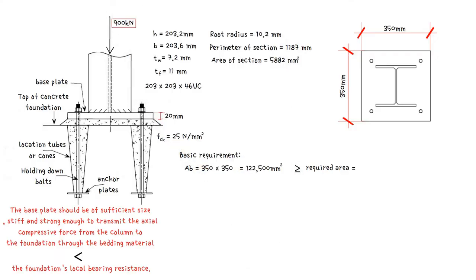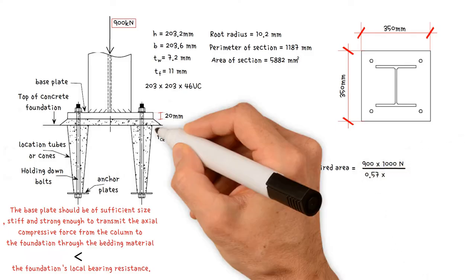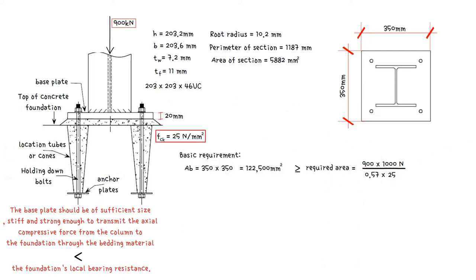The required area is design axial force 900 kilonewtons multiplied by 1000 to convert to newtons, divided by design compressive strength of concrete, which equals 0.57 times compressive strength 25 newton per millimeter squared. This results in an area of 63,158 millimeters squared.